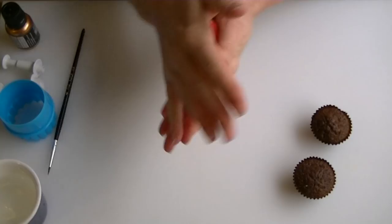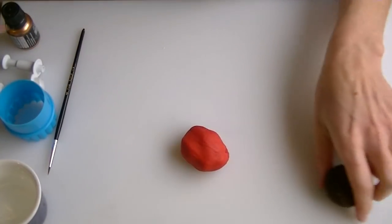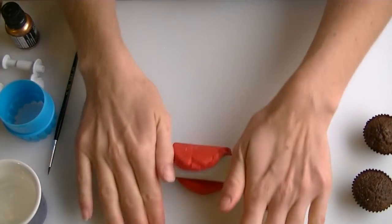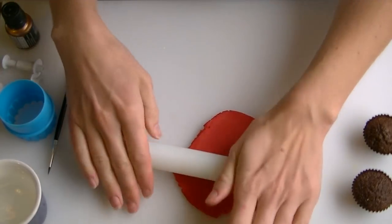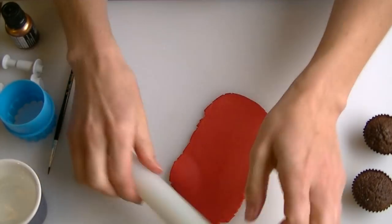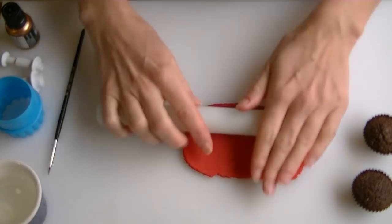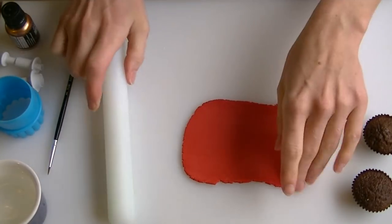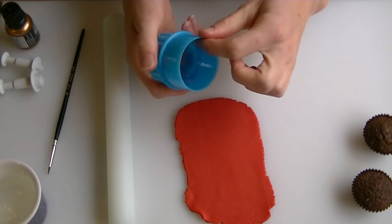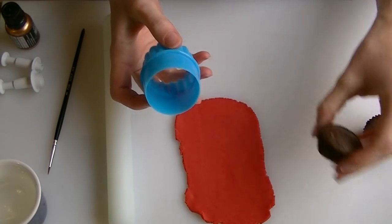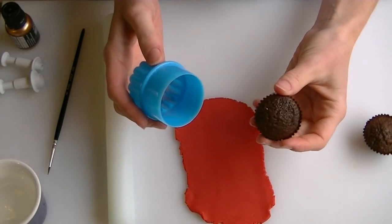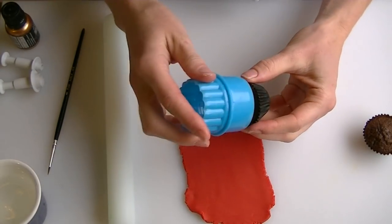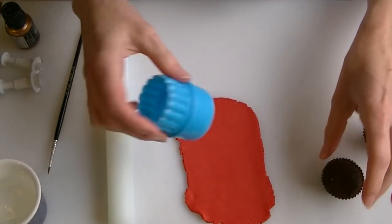So I've just got some normal fondant that we're going to roll out. Now you don't want it too thick, and I'm going to cut out a circle for each cupcake. I'm just using miniature ones, you can do it on bigger cupcakes that's fine. I'm using a cutter that's a little bit bigger than my cupcake.